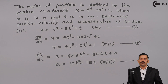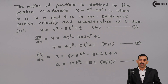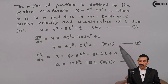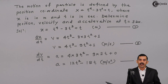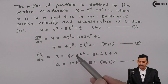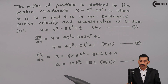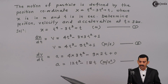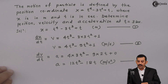Now we have the equation of x, the equation of velocity, and the equation of acceleration all ready. The problem is asking to determine position, velocity, and acceleration at t equal to 3 seconds. What we have to do is simply substitute t equal to 3 seconds into each of these equations to get the required values.